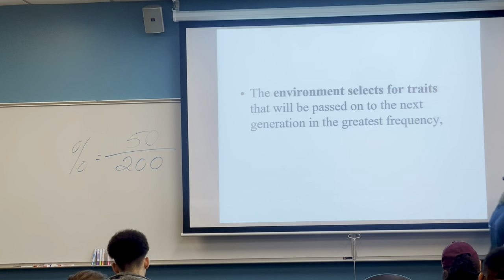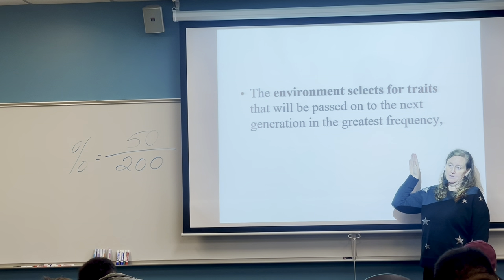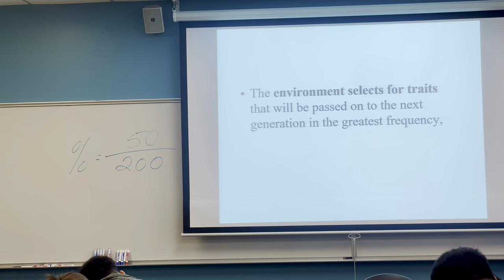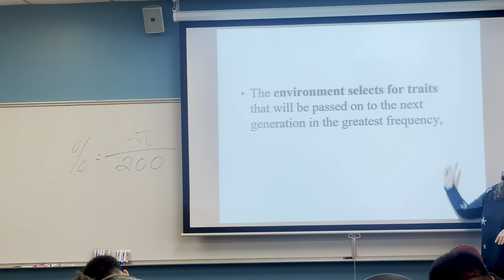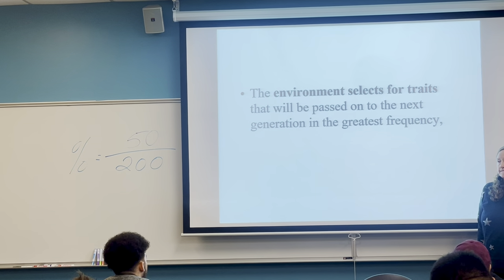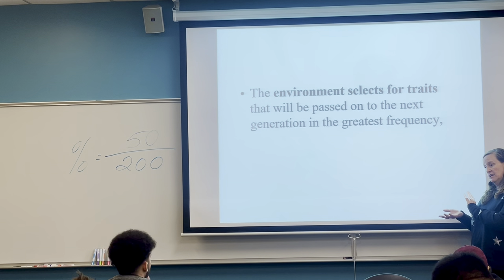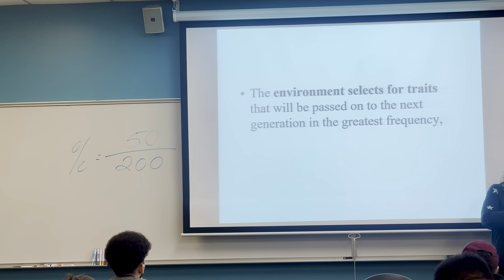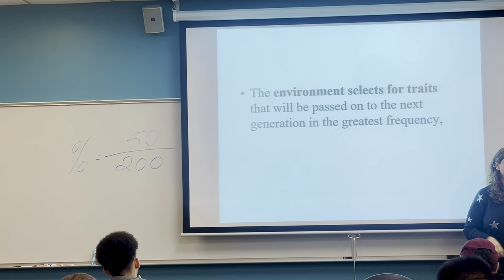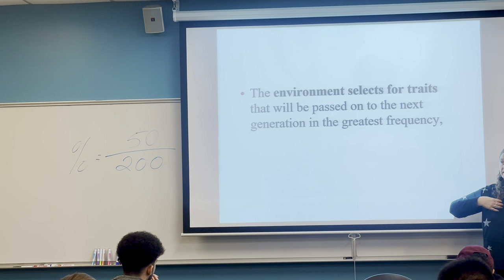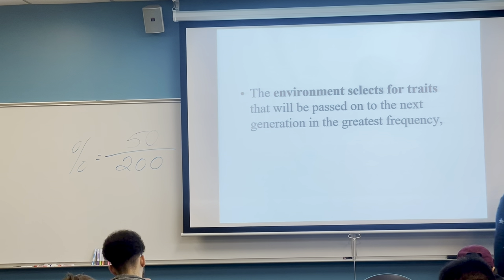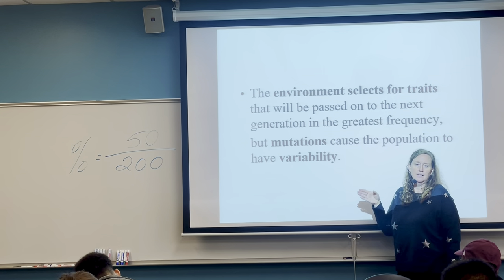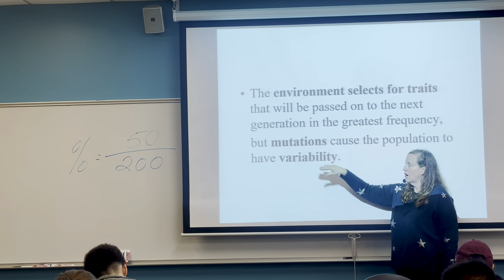The environment — natural selection — selects for the traits that will be passed on. But 'selects for' doesn't mean the environment is picking who survives. The environment is what it is. The variants in the population either survive well or they don't. They pass on their genes by reproducing because they survive well, or they don't. Mutations happen by chance — accidents in the copying of DNA cause variability in a population.